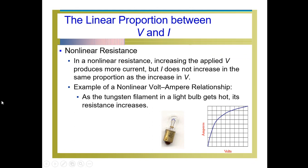In a non-linear resistance, increasing the applied voltage produces more current, but I does not follow the increment in voltage in a proportional manner. For example, with a tungsten filament in a light bulb: when voltage is applied and current flows, after some time the temperature of the bulb increases because it gets hot, thereby its resistance also increases — meaning resistance is not constant. Due to that, the volt-ampere characteristic doesn't follow linear behavior; it is initially linear but becomes non-linear as temperature increases.